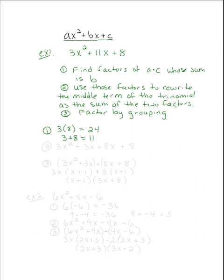Step 2: I am going to use those factors — 3 and 8 — to rewrite the middle term. My middle term is 11x, and now I am going to rewrite that as 3x plus 8x, because 3 plus 8 is 11. So I keep the first term, 3x squared, and now my middle term just became 3x plus 8x, plus 8 for the last term. We have 3x plus 8x which is 11x, so as long as it adds up to be the middle term, we have not changed the problem — we have just rewritten it differently.